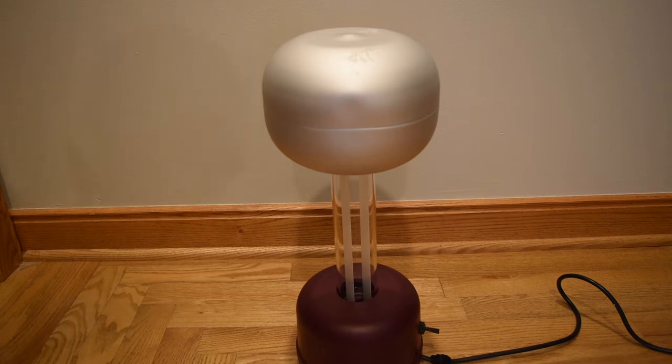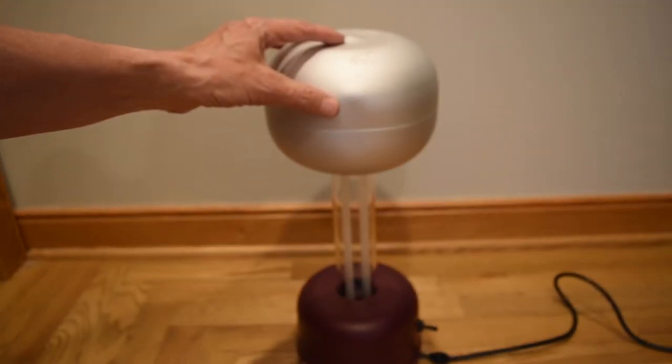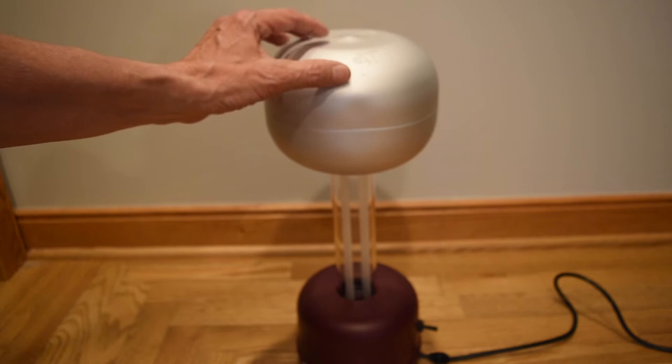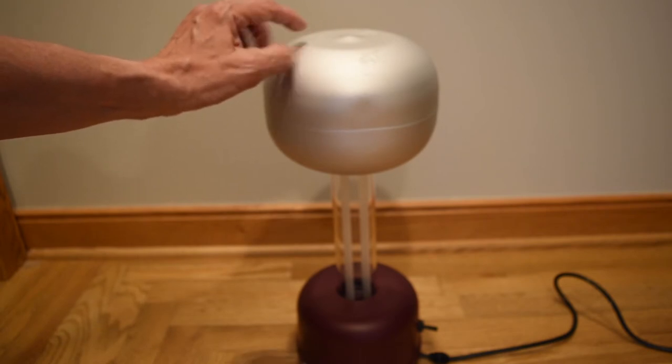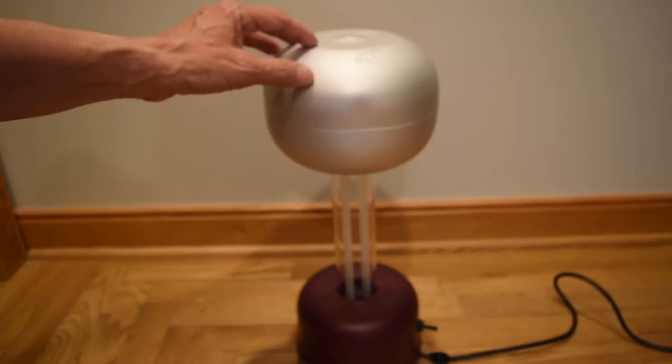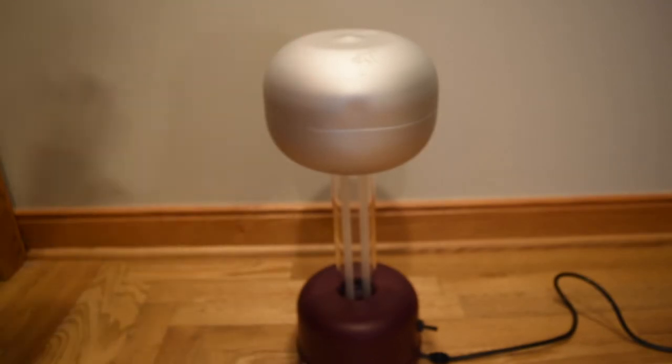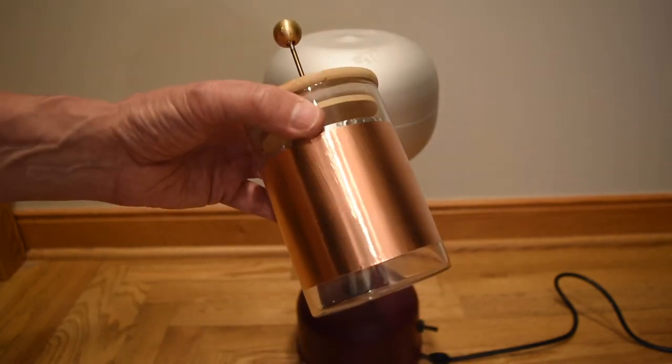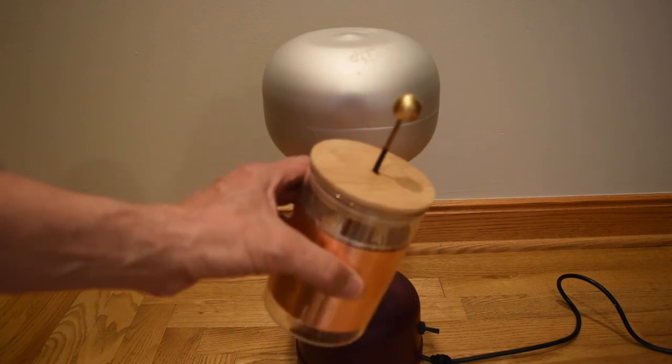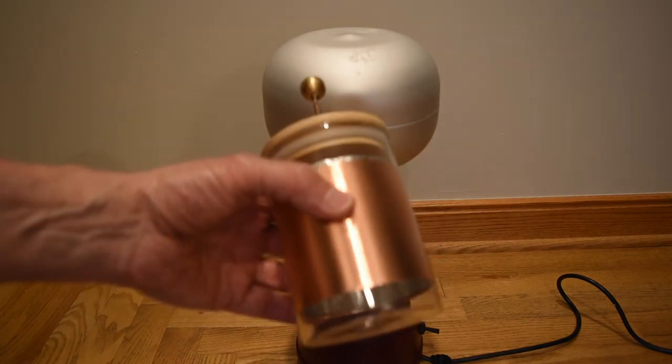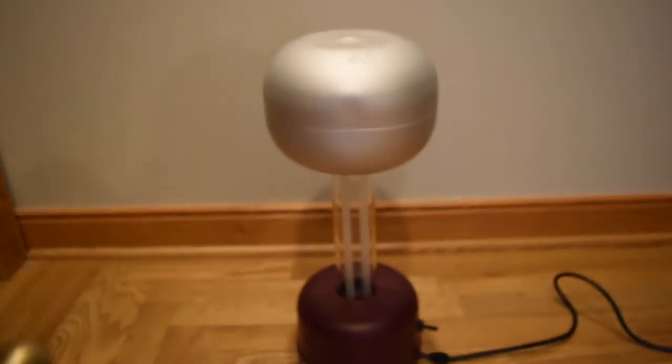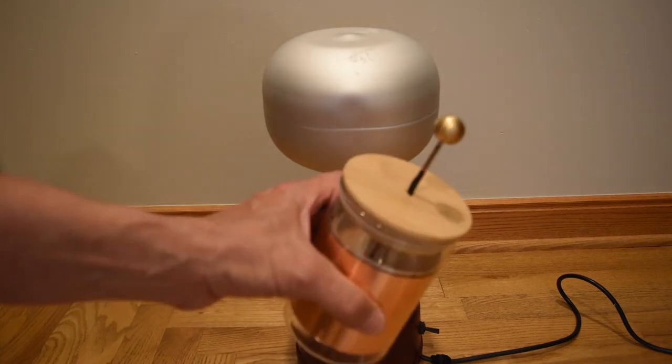A capacitor consists of two conductors. So the way to think of the Van de Graaff generator is this globe here is one conductor, and the other conductor is wherever the electric fields emanating from this globe terminate, which are going to be a long distance away. It will be whatever metal structure it eventually encounters. Whereas for our Leiden jar, the two conductors are just separated by this thin piece of glass from the jar. The Leiden jar capacitor we constructed has about a thousand times the capacitance of our Van de Graaff generator. So I don't want to feel the sparks from our Leiden jar.